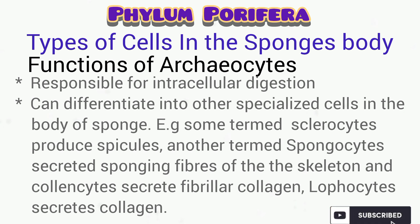Archaeocytes can also differentiate into other types of cells, such as the sclerocyte, which produces the spicules, or the spongocyte, which produces the spongy fibre of the skeleton, as well as the cholenocyte that secretes fibrillar collagen. It should also be noted that they can differentiate into the lophocyte that secretes collagen.